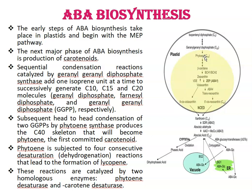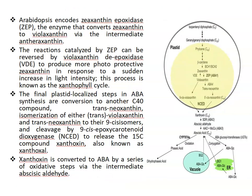These desaturation reactions are catalyzed by two homologous enzymes: phytoene desaturase and carotene desaturase. Arabidopsis encodes zeaxanthin epoxidase enzyme, ZEP. This enzyme converts zeaxanthin to violaxanthin via the intermediate antheraxanthin.